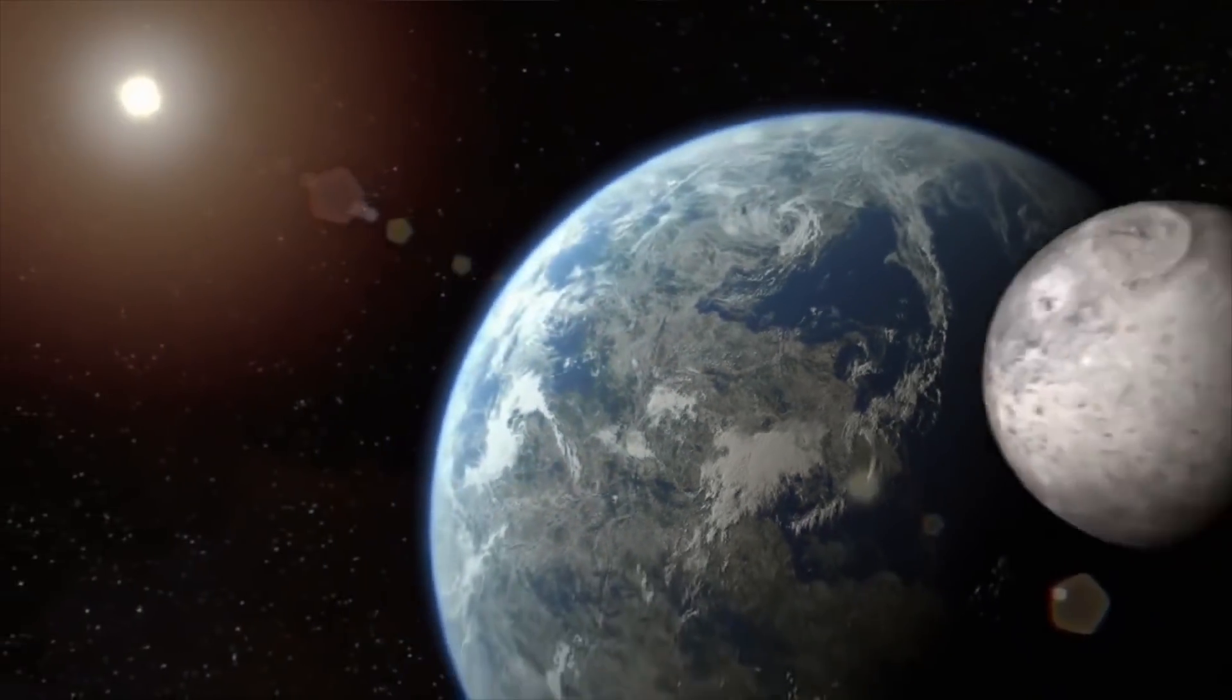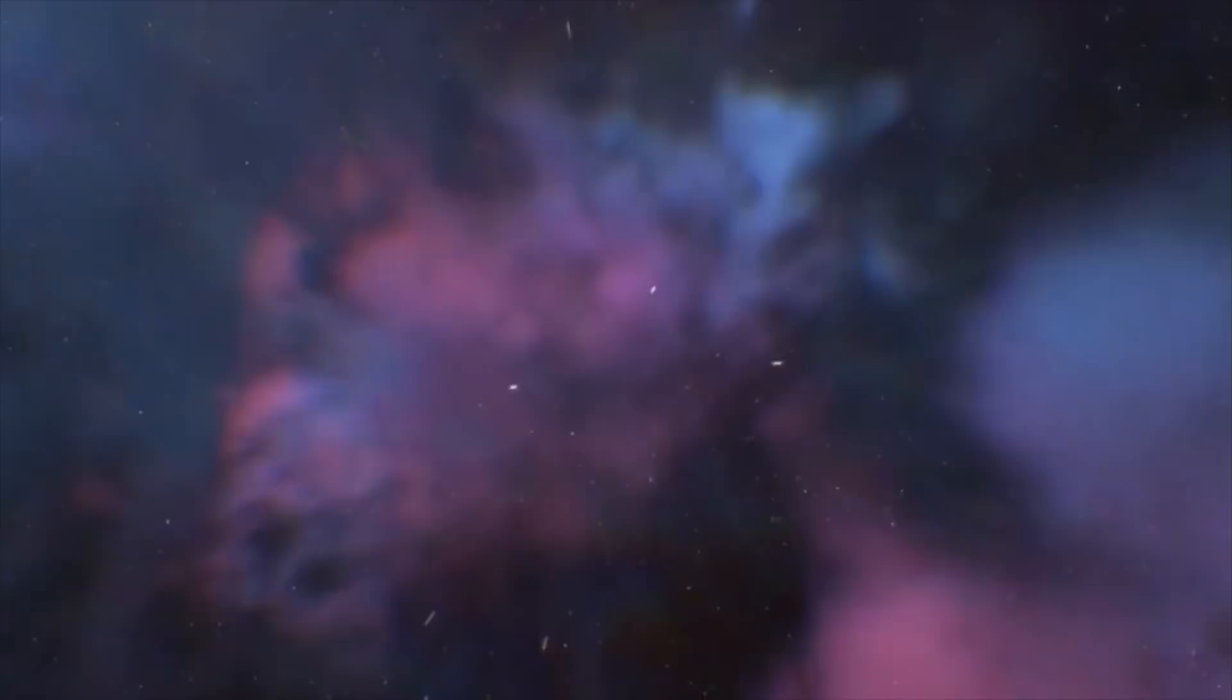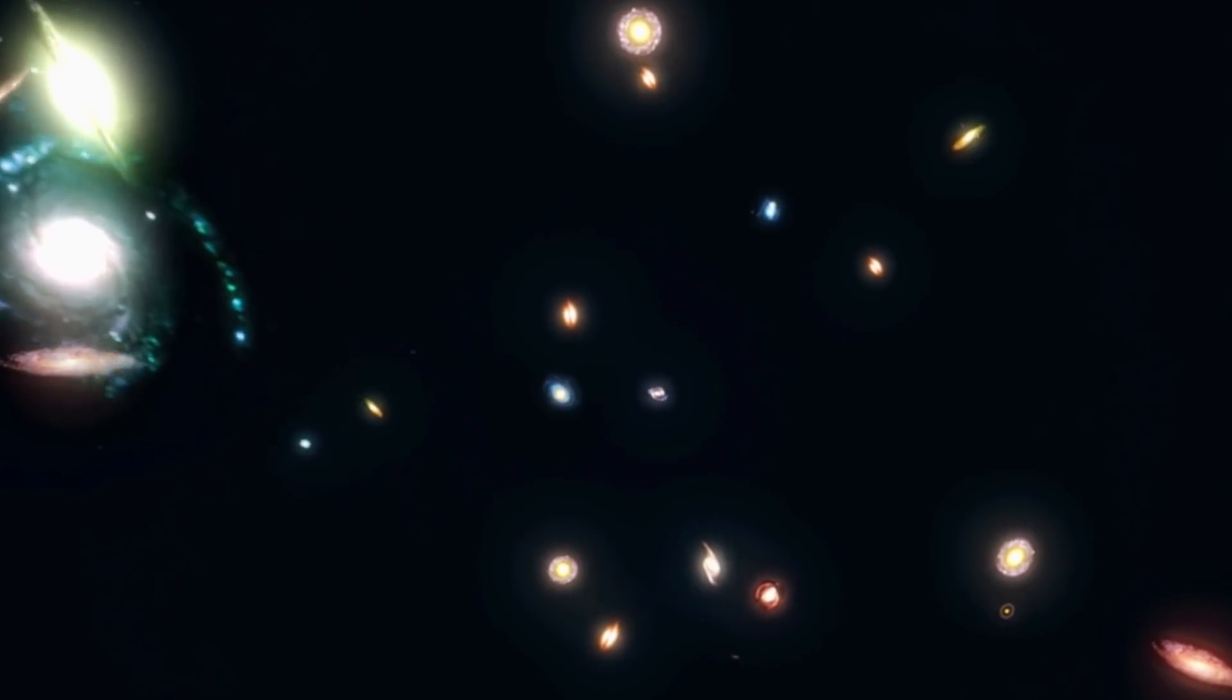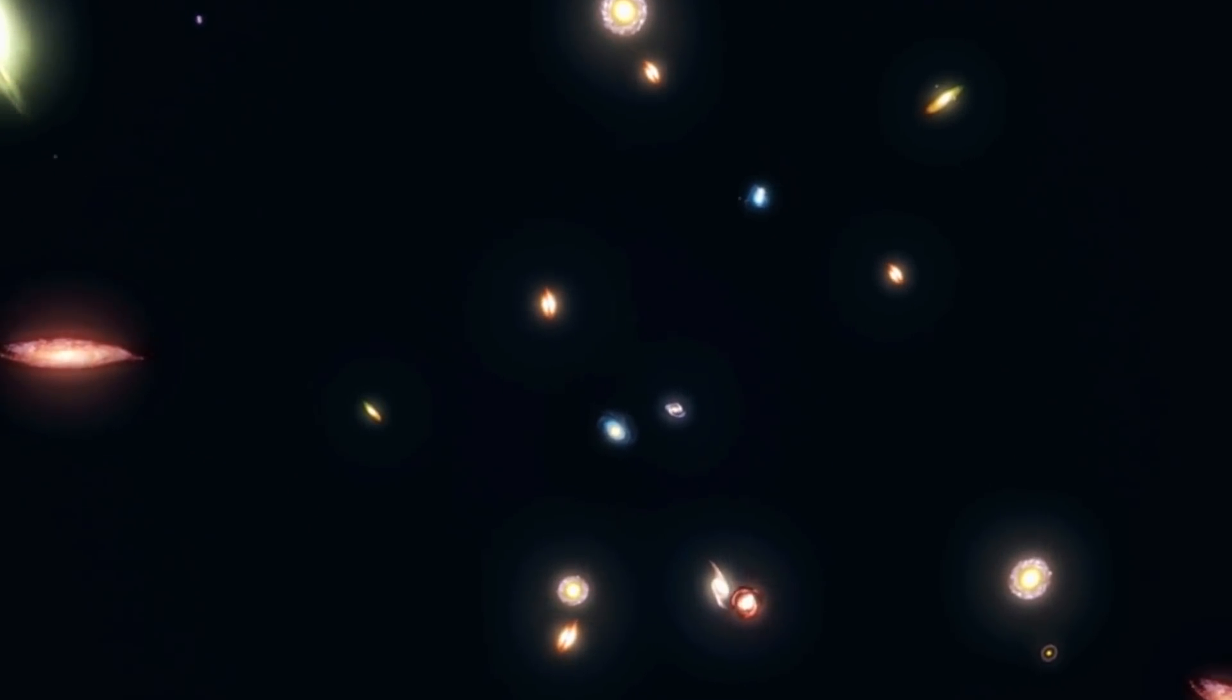But infinity means that beyond the observable universe, you won't just find more different planets. You will eventually find every possible thing. Everything. If you go far enough, you'll find another solar system with an Earth identical in every way, except that you had cereal for breakfast this morning instead of eggs. This notion seems inconceivable. But then, infinity is rather inconceivable.